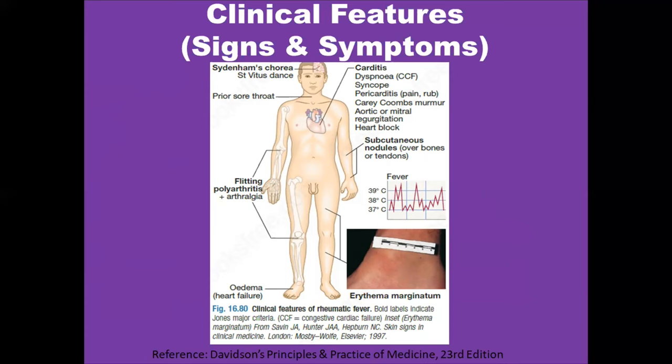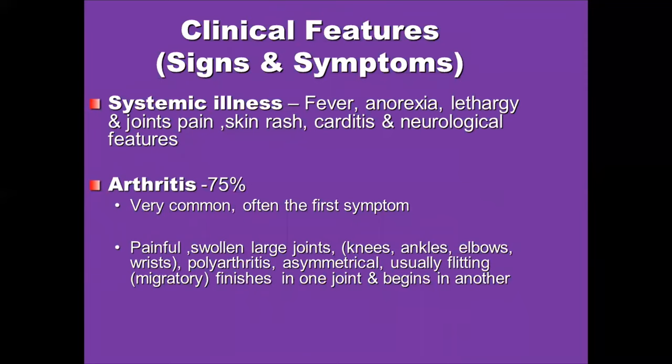Symptoms of pericarditis include pain and pericardial friction rub. Patients can also present with murmurs like the Carey Coombs murmur or mitral regurgitation, and if the conducting system is affected, the patient may present with heart block. Many patients will present with non-specific symptoms like fever, anorexia, lethargy, joint pain, skin rash, carditis, and neurological features.